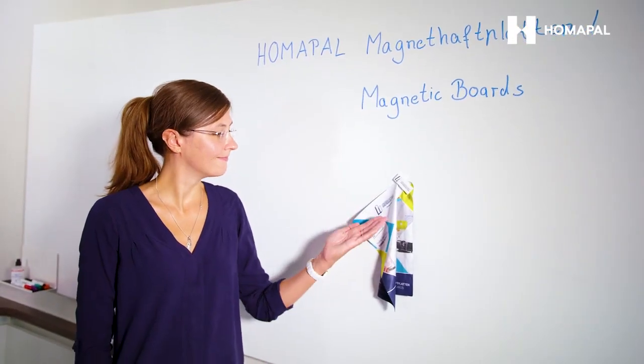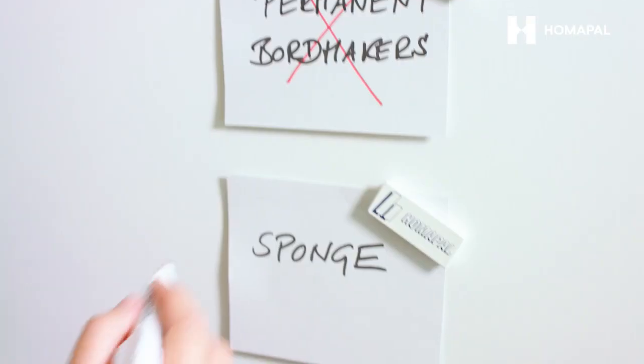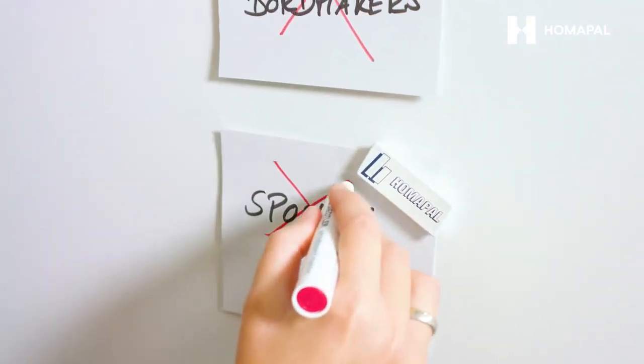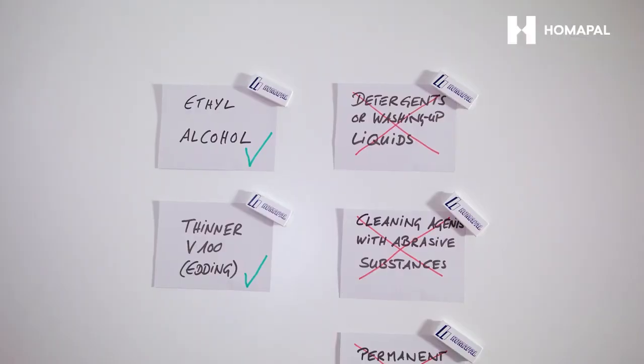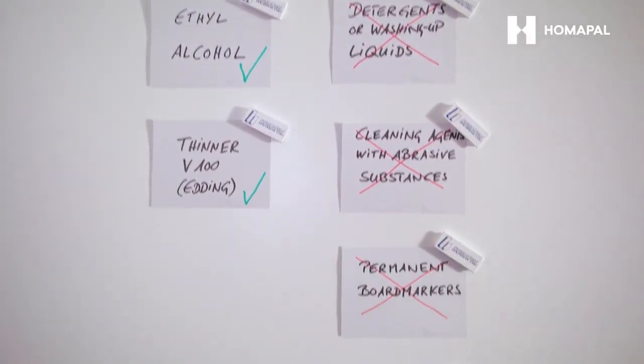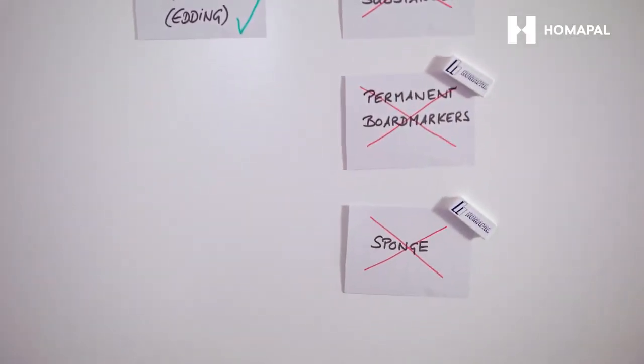These are available in many types and sizes at any supermarket. Sponges should not be used because of their rare exchange. After time, they will distribute the ink into the board rather than actually taking the ink off.